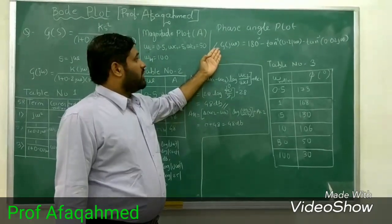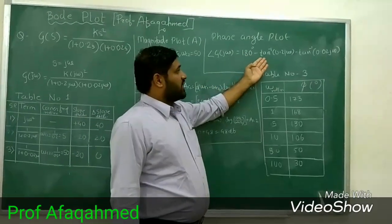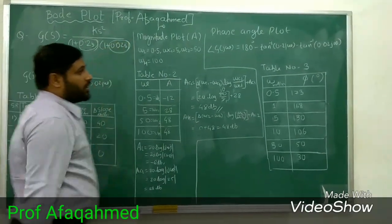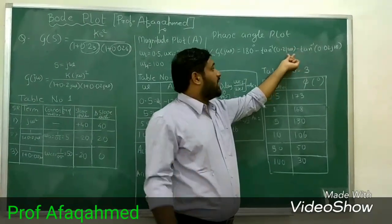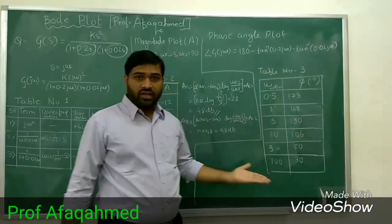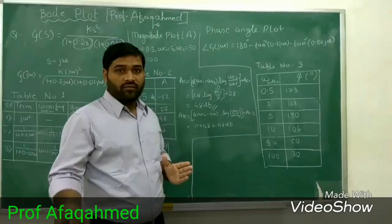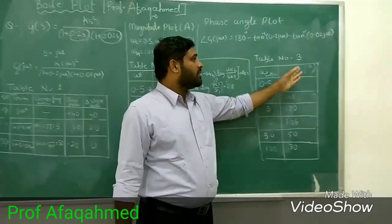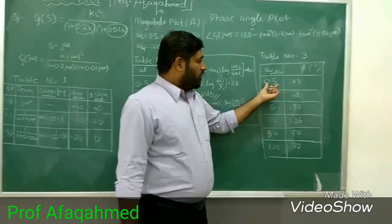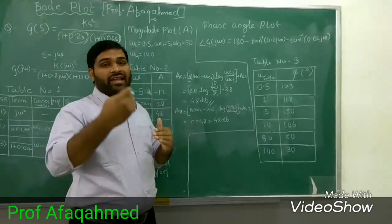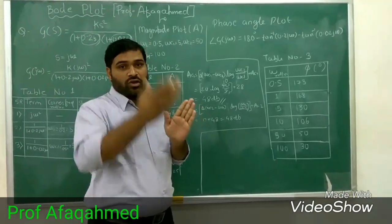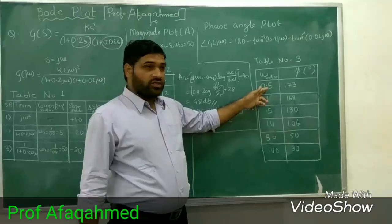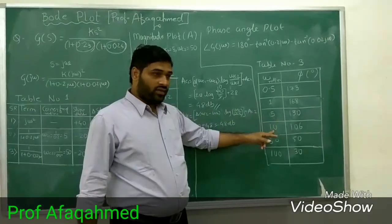The phase angle is given by the formula: angle of G(jω) = 1 × 90° − tan⁻¹(0.2ω) − tan⁻¹(0.02ω), where we substitute the value of omega. This is Table 3. After completing this table, we can go for the final plot. The table has two columns: first is omega in radians per second, and second is φ. To get a perfect slope, I am adding extra frequency values: 0.5, 1, 5, 10, 50, 100.